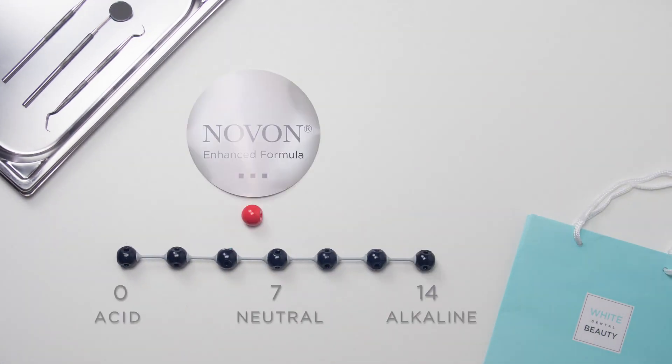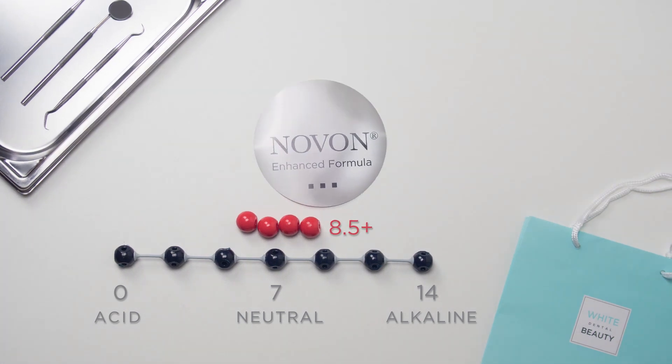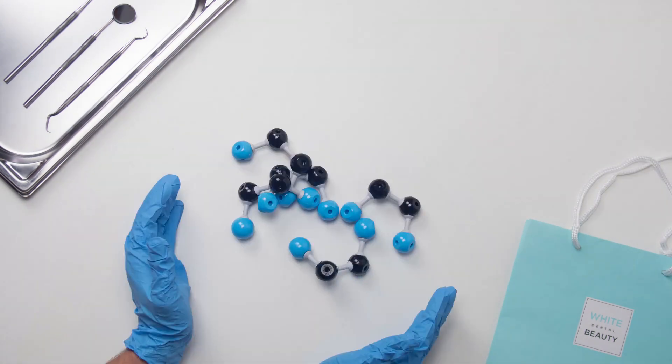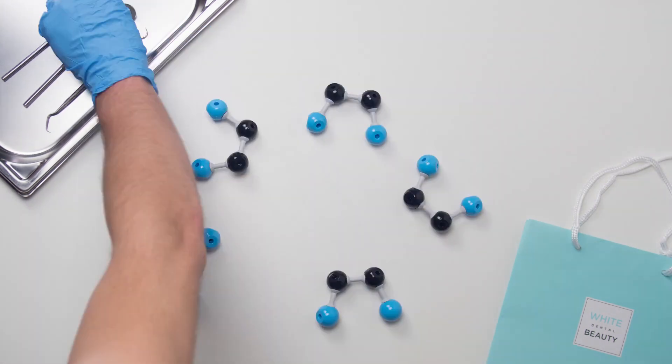NoVon has a pH value of 6.5, which is acidic and stable, but when it comes into contact with saliva, this rises to 8.5, creating an alkaline environment where hydrogen peroxide is able to break down more rapidly, causing an enhanced release of perhydroxyl ions.